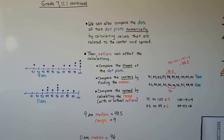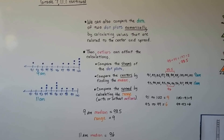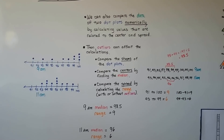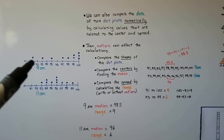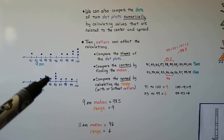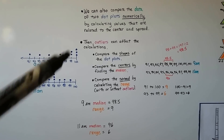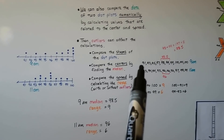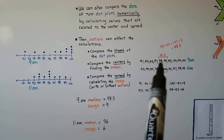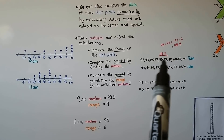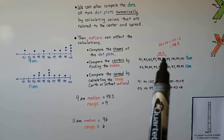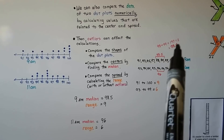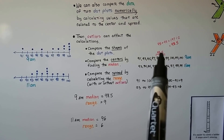We can also compare the data of two dot plots numerically by calculating values related to center and spread. Outliers can affect the calculations. We compare the shapes of the dot plots — this one is kind of tall in the center, and this one is taller at the end. We compare the centers by finding the median. We write them from least to greatest and find the middle number. Since we have an even amount — 10 numbers — 98 and 99 were in the middle, so we find the average: 98 plus 99 is 197 divided by 2, giving us 98.5.